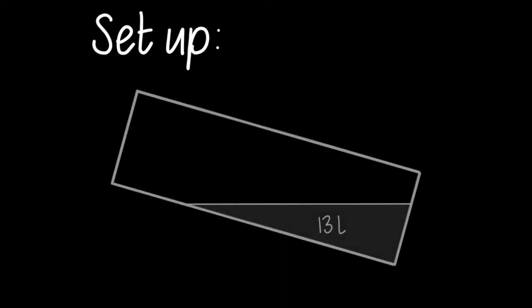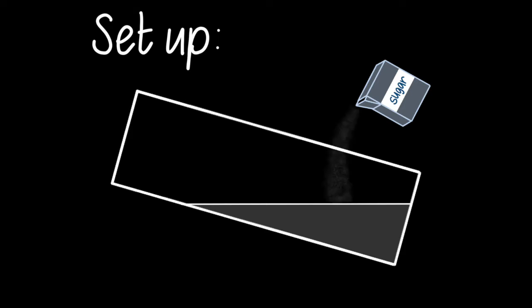Now for the experimental setup. We begin by propping up the tank with a few foam blocks and adding 13 liters of water. We take some sugar and add about 100 grams to create a dense layer at the bottom of the tank, so we can have two layers of water to see an internal wave pass between these layers.